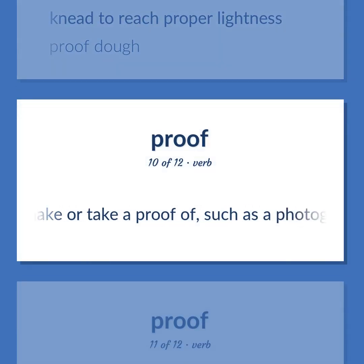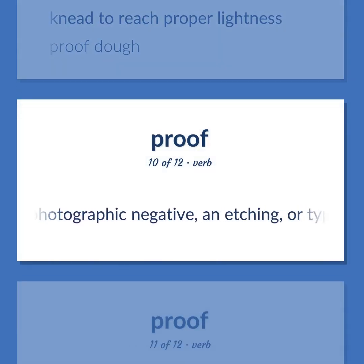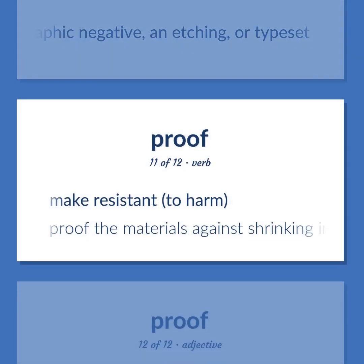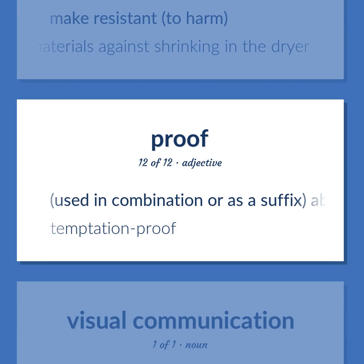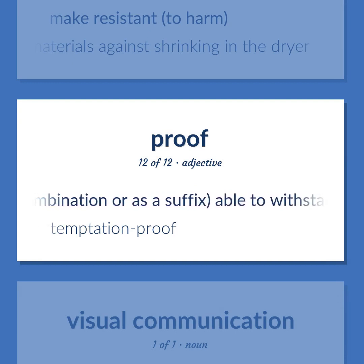Proof: Make or take a proof of, such as a photographic negative, an etching, or typeset. Make resistant to harm — proof the materials against shrinking in the dryer. Used in combination or as a suffix: able to withstand. Temptation-proof.